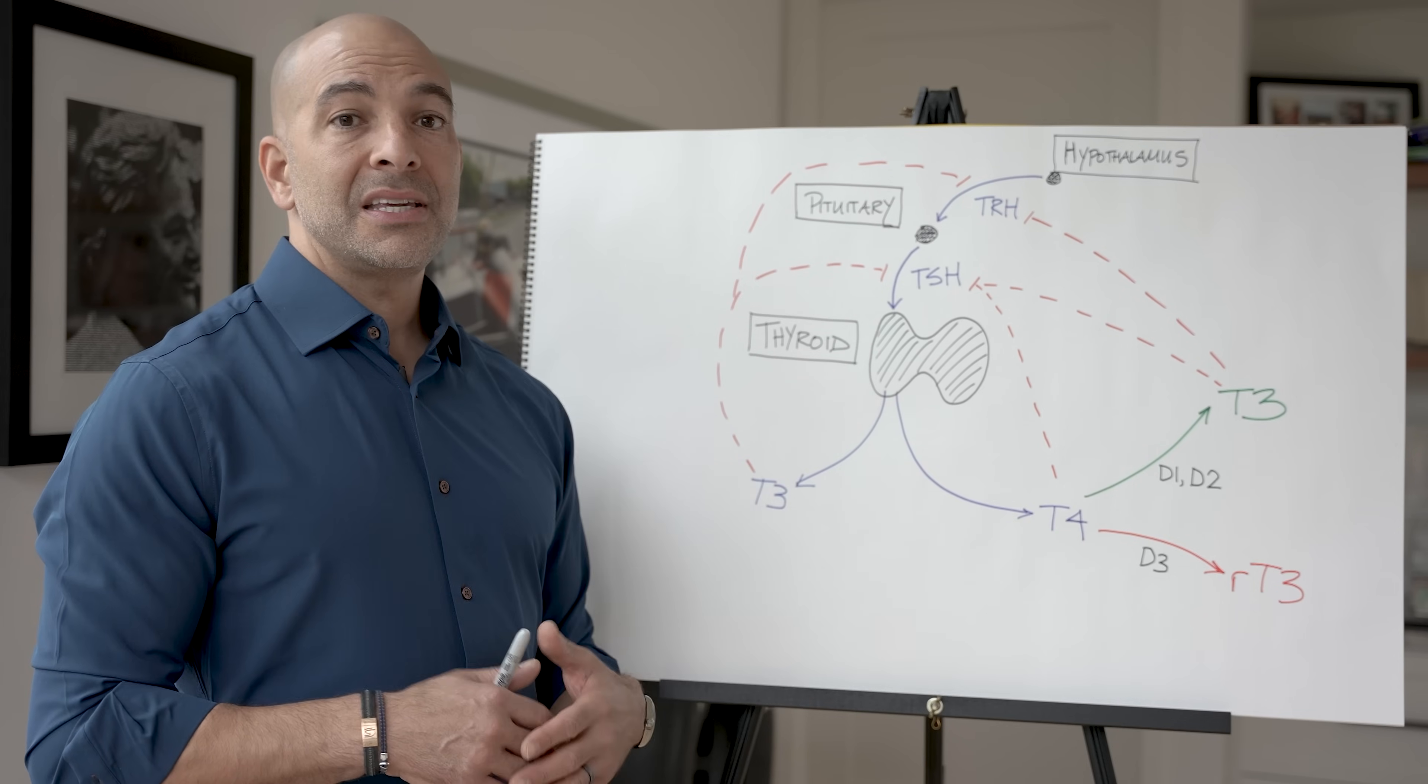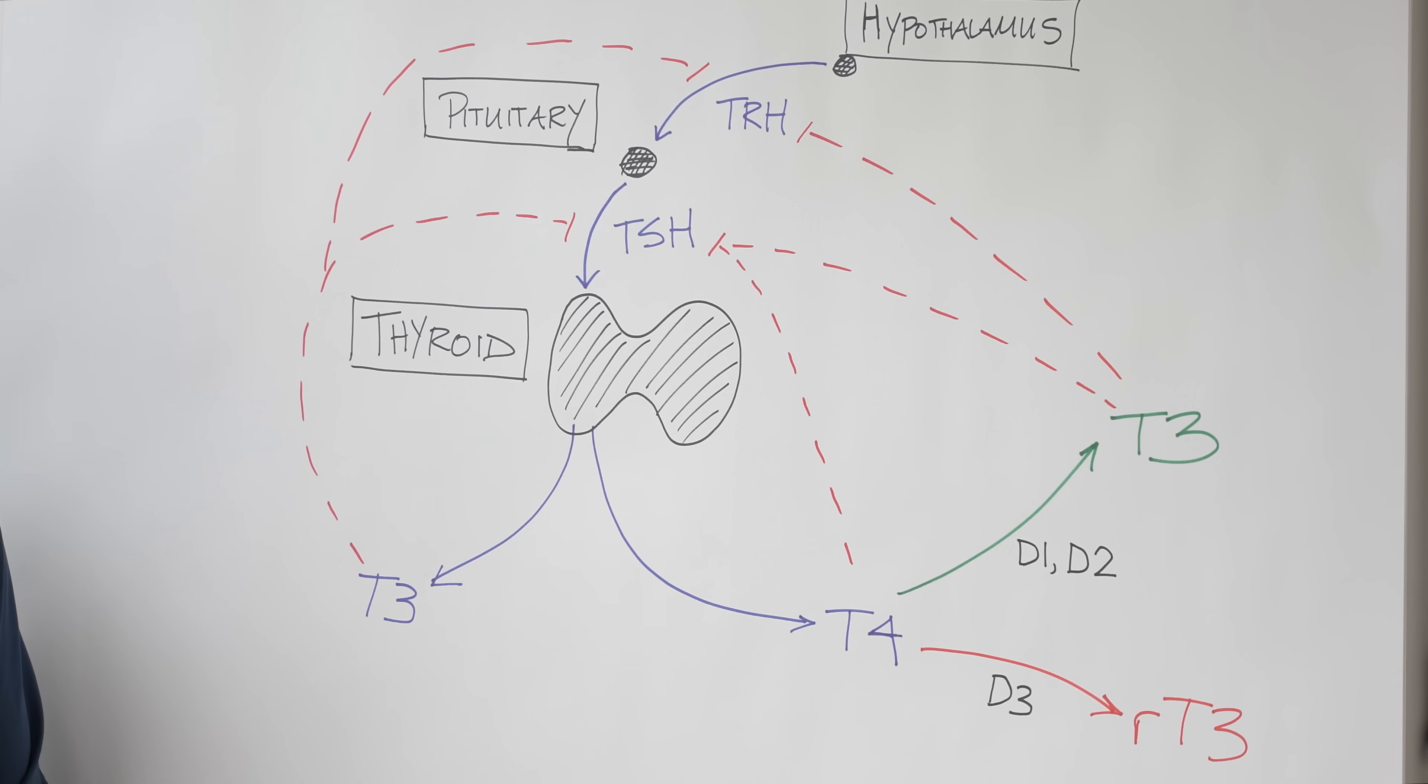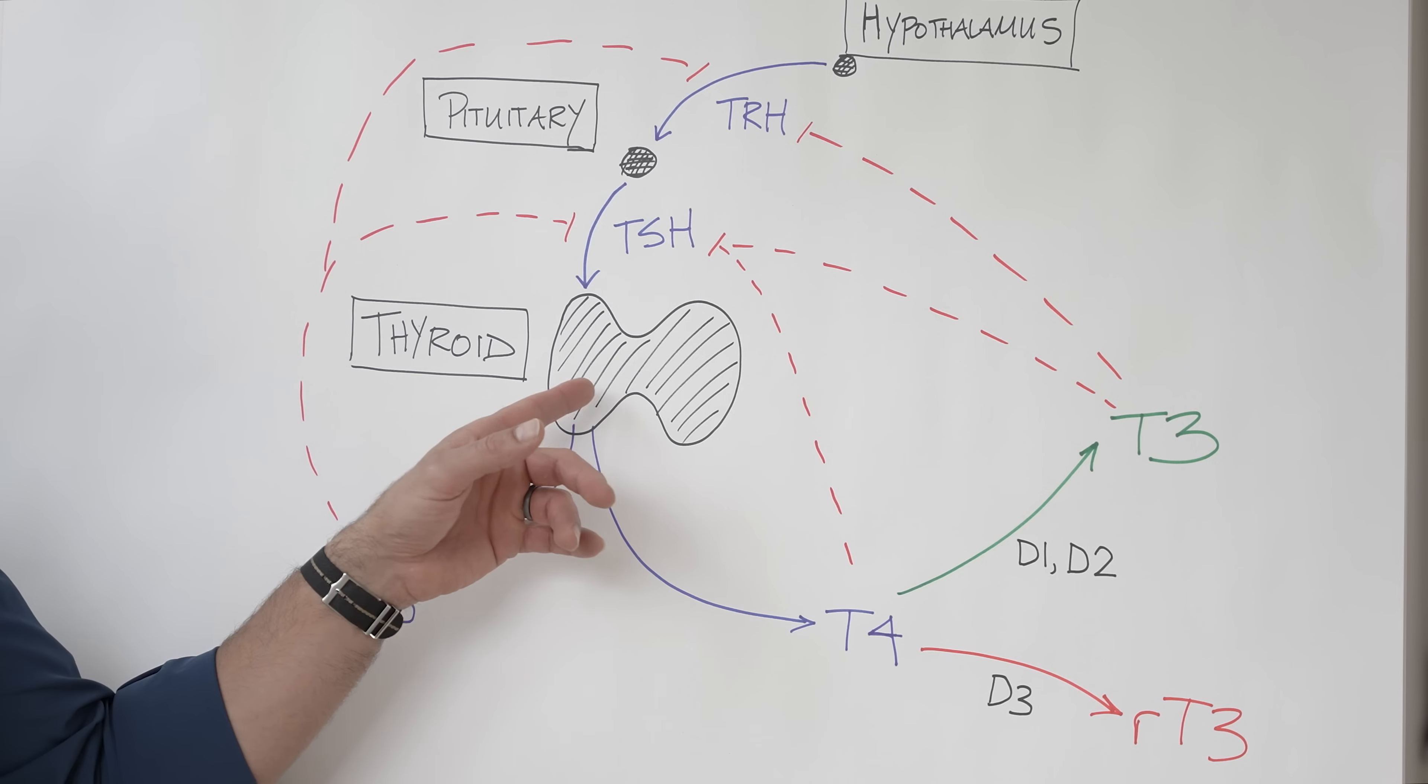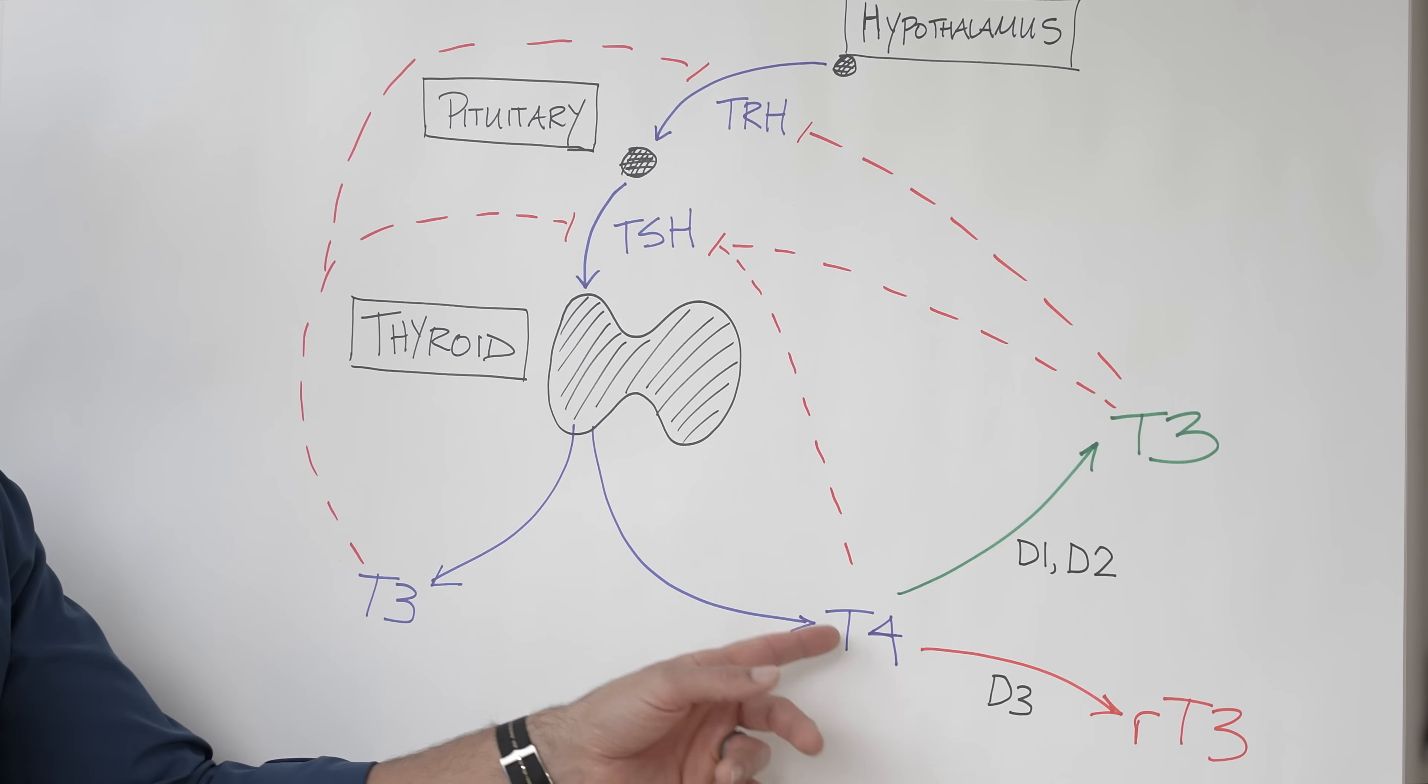T4, conversely, is the inactive version of the hormone. So if you're paying attention to what I just said, you'll note I just said that basically most of what comes out of the thyroid is T4, which is inactive.